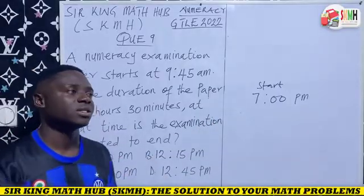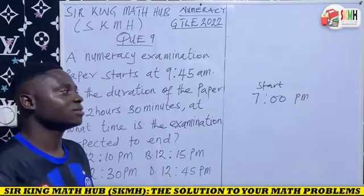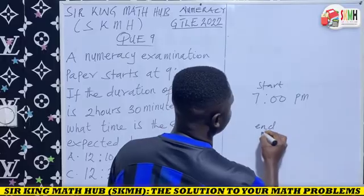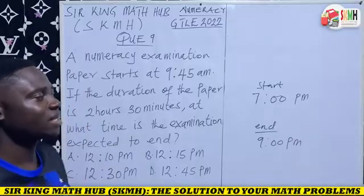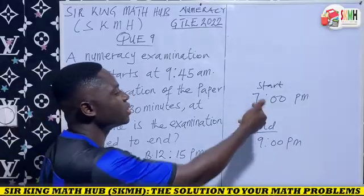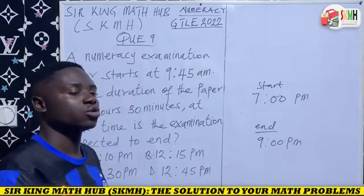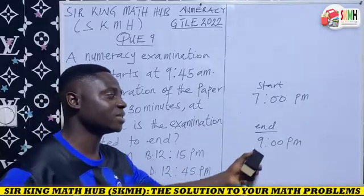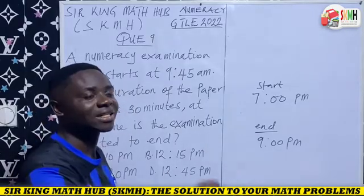The movie started at exactly seven o'clock PM and the duration is two hours, so clearly the movie will end at exactly nine o'clock PM. How did we get nine o'clock PM? We added the two hours to the start time: seven plus two. So we add the duration to the start time, and that gives us the end time, which is nine o'clock PM.